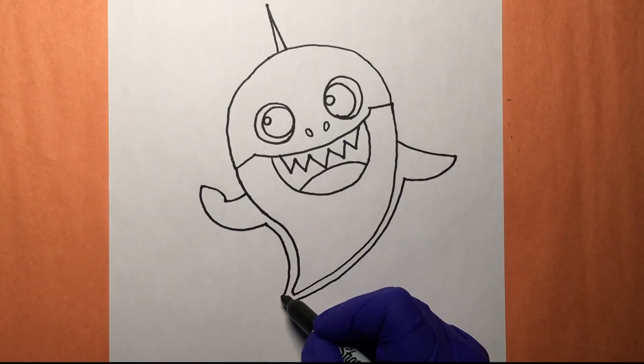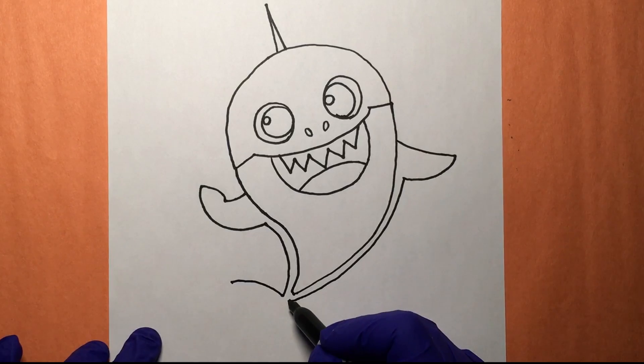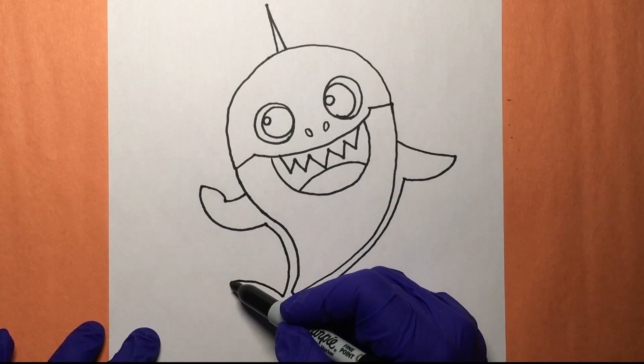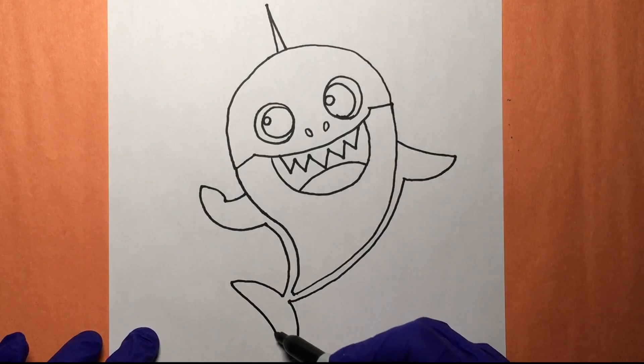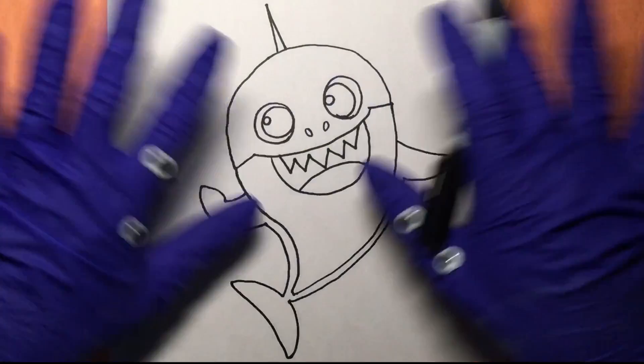And now we continue with the tail like this. And then come around like that. And join them together. Just like that. And there we go. It's Baby Shark.